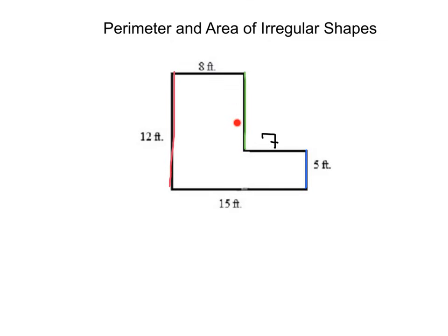I'm going to go ahead and shift that over, just like we did before, and that's my missing length. 5 plus what is going to give me 12? I can see that that green length is going to be 7 also.